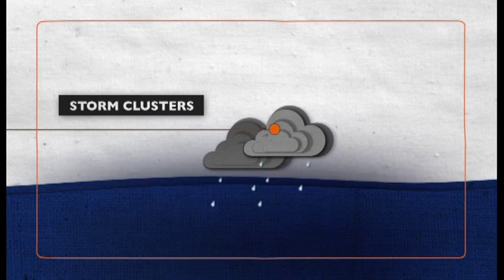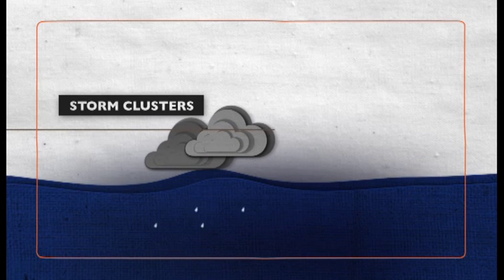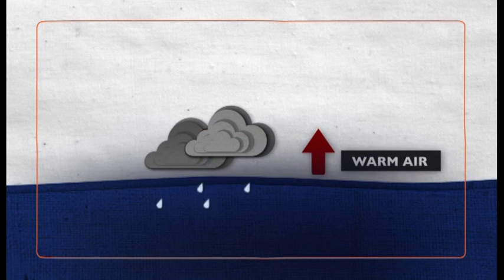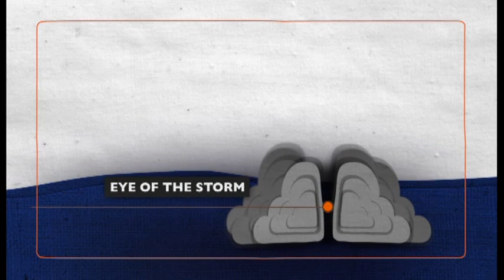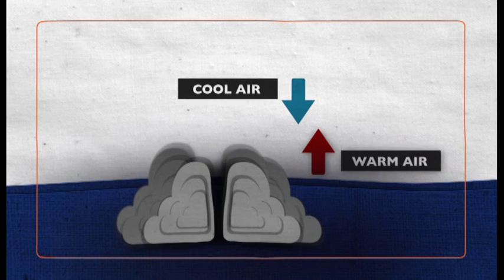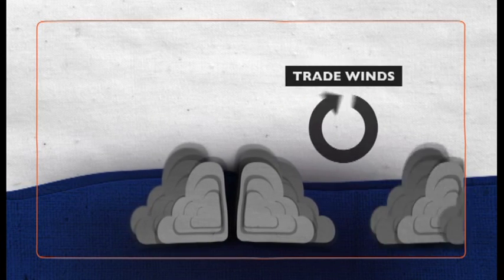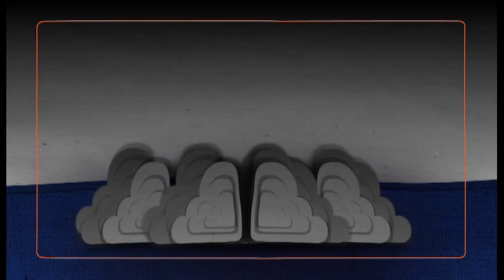When strong clusters of thunderstorms drift over warm ocean waters, the warm air from the sea begins to rise, creating low pressure areas on the surface of the ocean. Air rises faster to fill this low pressure area, and combined with trade winds spinning in different directions, the storm forms.